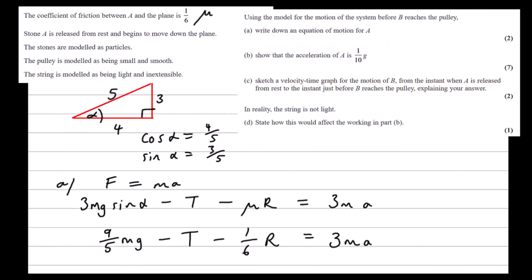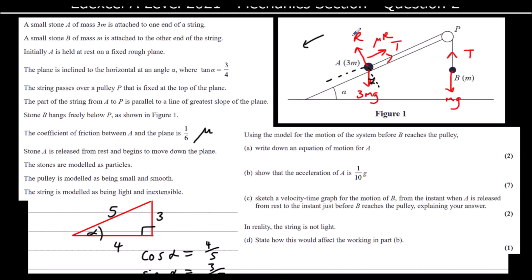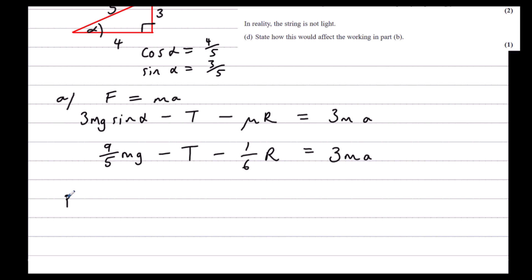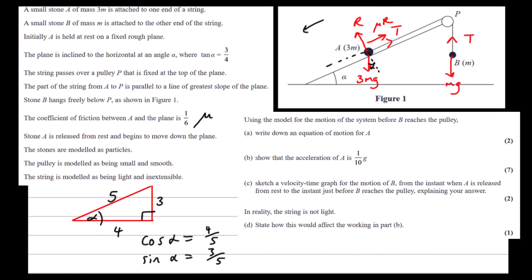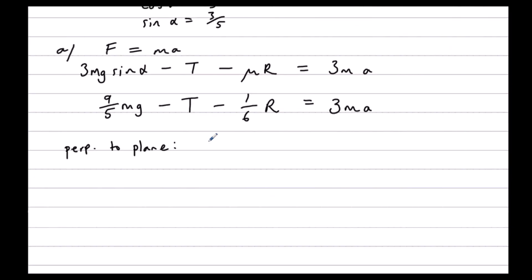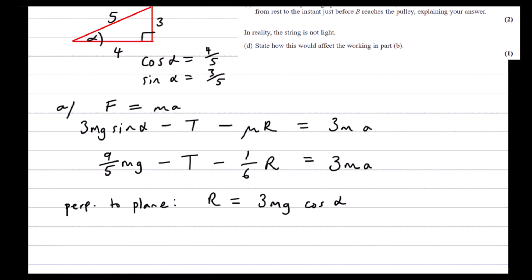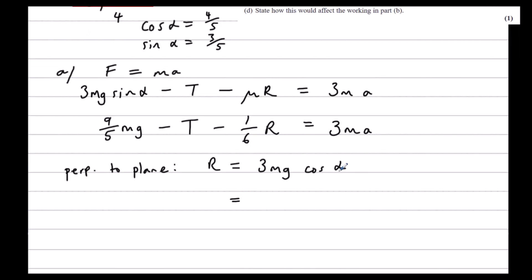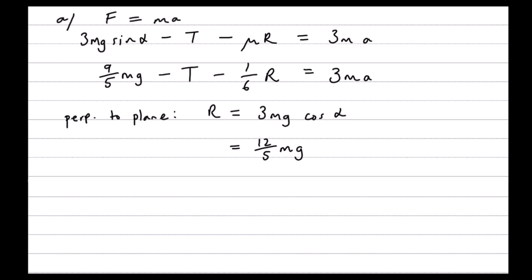We can work out what R is by resolving perpendicular to the plane. So the forces up equal the forces down. R is equal to 3mg cos alpha. And we can change cos alpha into four-fifths. So three times four-fifths will be twelve-fifths. So R is twelve-fifths mg.